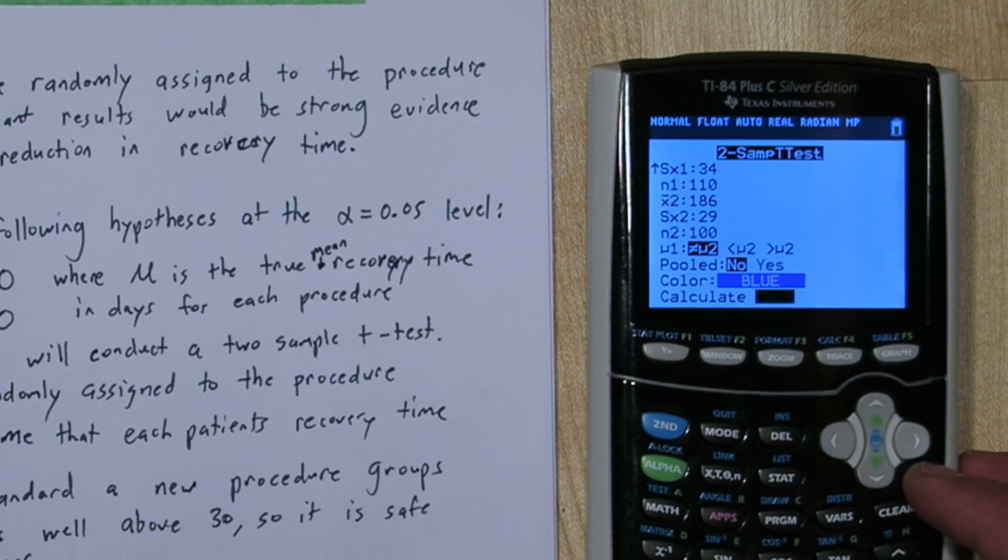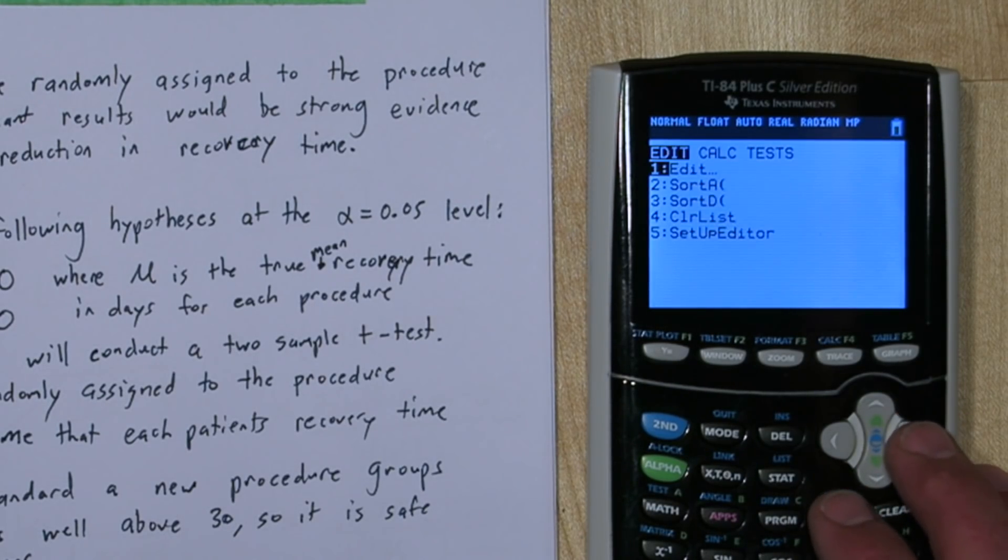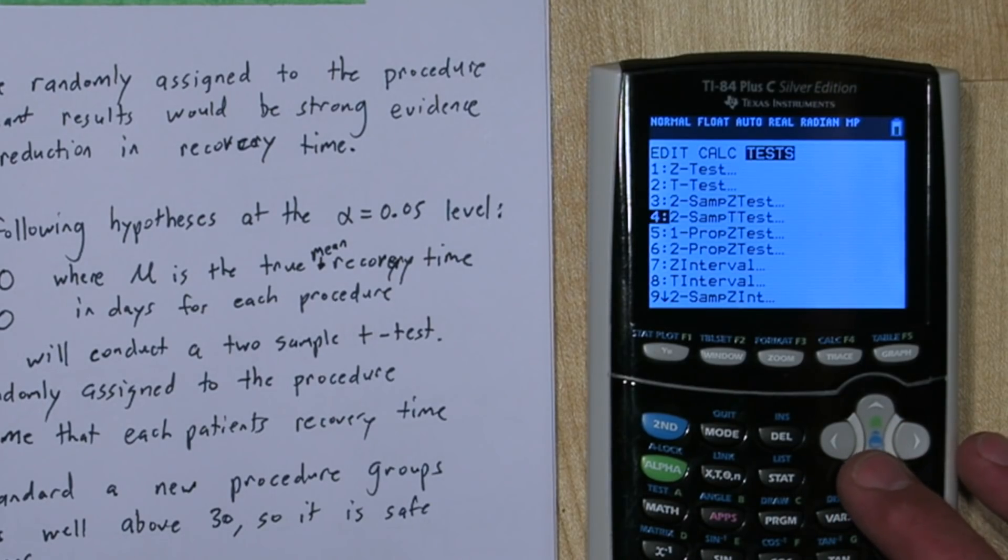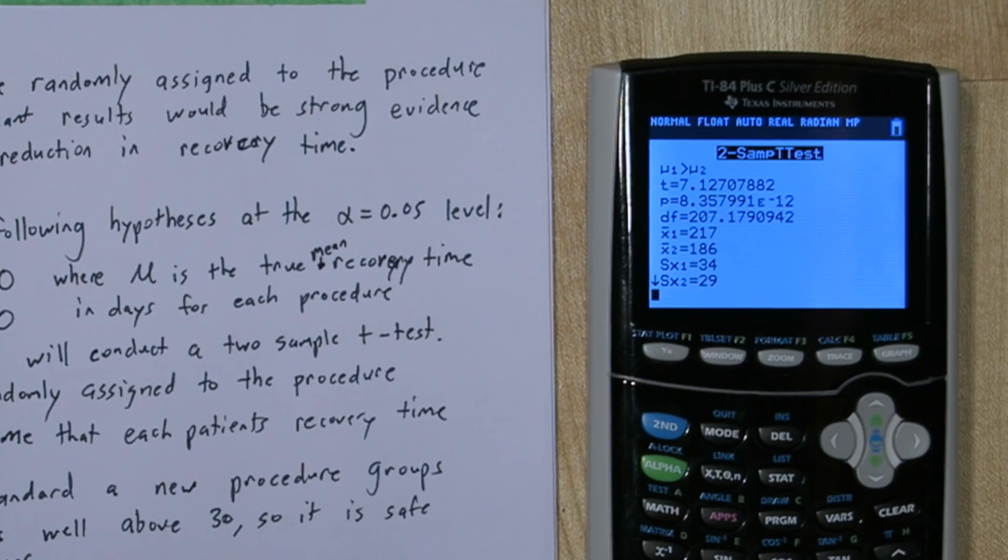Now I'm going to push draw first. All right, so here's a t distribution, and I don't see anything shaded. That's because our p-value is basically 0. Our test statistic is higher than 7. I mean, this is very statistically significant results. So I'm going to go back, and this time instead of pushing draw, I'm going to push calculate.